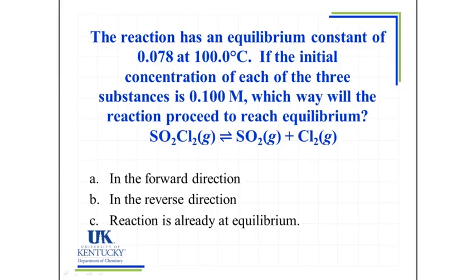So let's look at an example. The reaction has an equilibrium constant of 0.078 at 100 degrees Celsius. If the initial concentration of each of the three substances is 0.100 molar, which way will the reaction proceed to reach equilibrium?